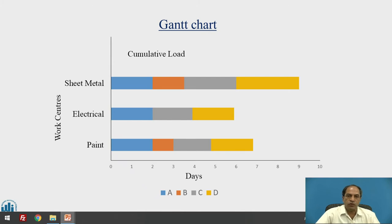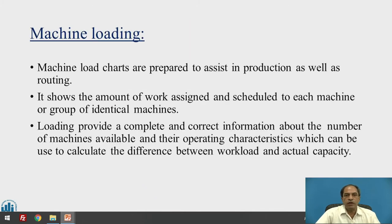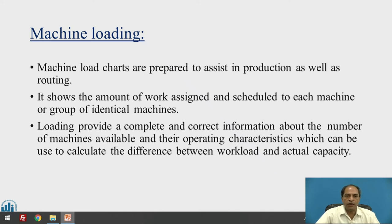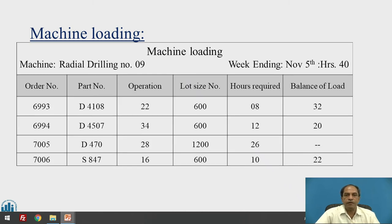Machine load charts are prepared to assist in production as well as routing. They show the amount of work assigned and scheduled to each machine or group of identical machines. Loading provides complete and correct information about the number of machines available and their operating characteristics, which can be used to calculate the difference between workload and actual capacity — showing how much load is available, how much is balanced, and what capacity is booked by various orders.